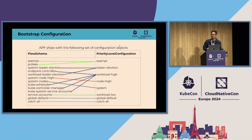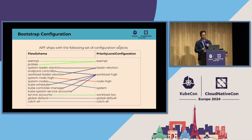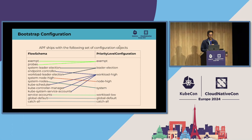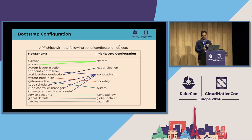APF is highly configurable via API objects. It ships with a set of flow schema and priority level configuration objects, referred to as bootstrap configuration. The left column shows the flow schema objects available in order of their matching precedence. On the right, we have the available priority level configuration objects. A flow schema object is assigned to exactly one priority level, while a priority level can be shared by multiple flow schemas.